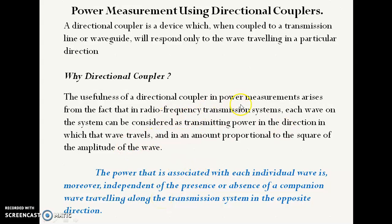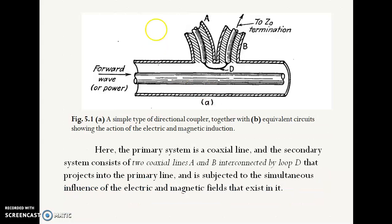The power associated with any individual wave traveling in one particular direction is actually independent of the presence of any other wave traveling in the opposite direction. In a transmission line there are two types of waves: incident wave and reflected wave. If we only want to measure the power of the incident wave, we can use a directional coupler so that the reflected wave has no impression on the power measurement of the incident wave.